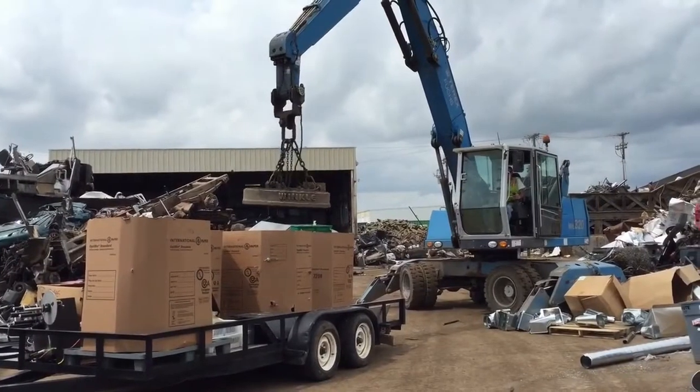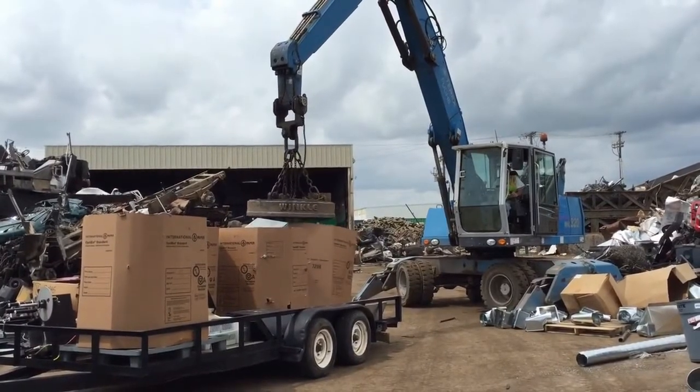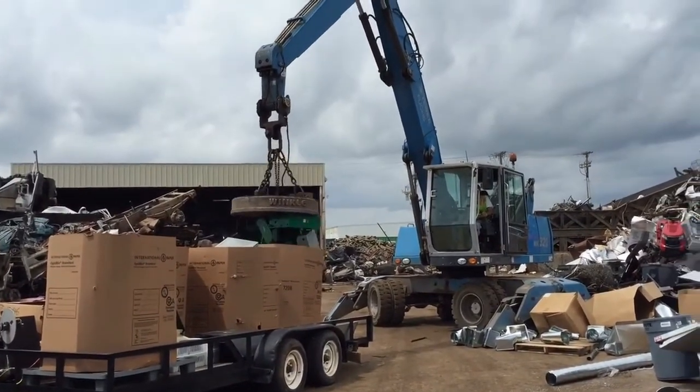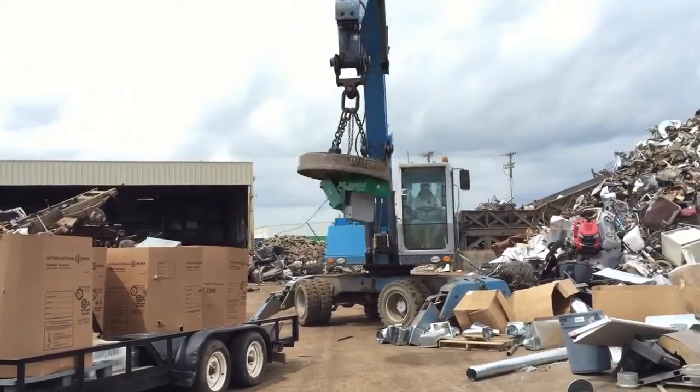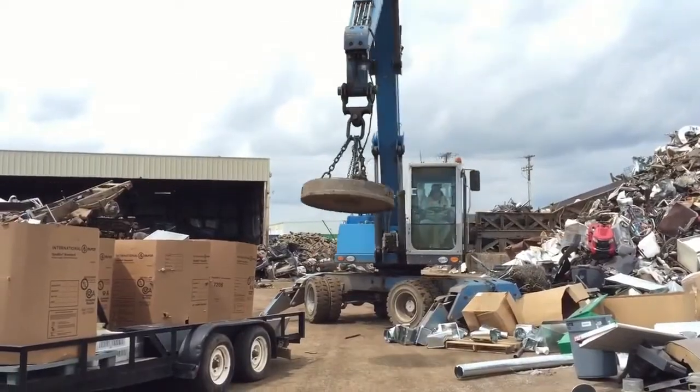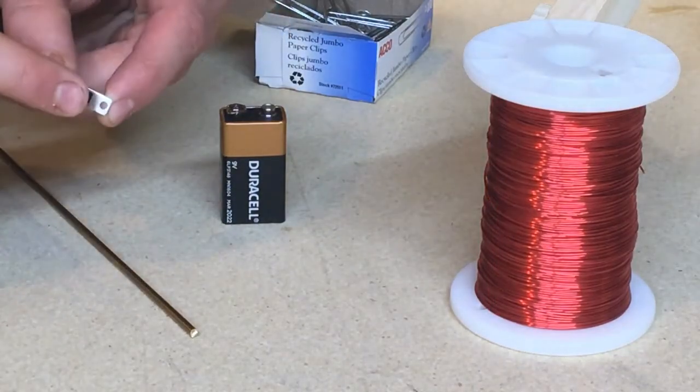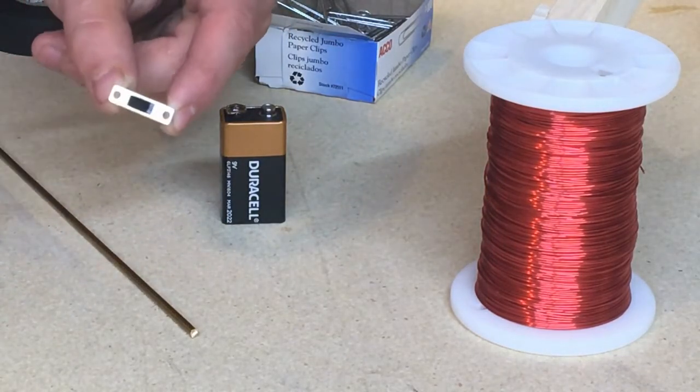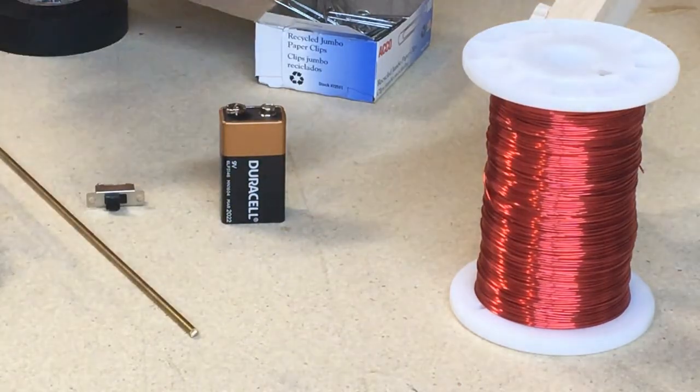When we wrap the coil of wire around the copper rod, then run an electric current through it, the magnetic field that's generated will turn our copper rod into an electromagnet that we can use to pick up metal objects. By adding a switch to the circuit, we can turn the electromagnet on and off, so we can pick up and release the metal.